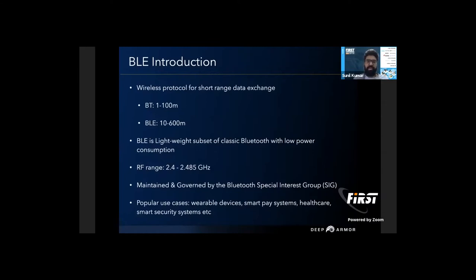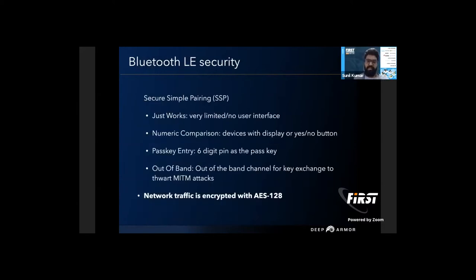Let's jump into the BLE part. Bluetooth Low Energy is a subset of Bluetooth used for short-range data exchange. It operates at a frequency of 2.4 to 2.485 GHz and its range varies from 10 to 600 meters. Bluetooth is governed by the Bluetooth SIG group and the recent version is 5.0. It is widely used in wearable devices, healthcare systems, earphones, and more. Coming to the pairing mechanism, there are mainly four pairing mechanisms. Secure Simple Pairing was introduced from Bluetooth version 2.1 and mainly simplifies the pairing mechanism.